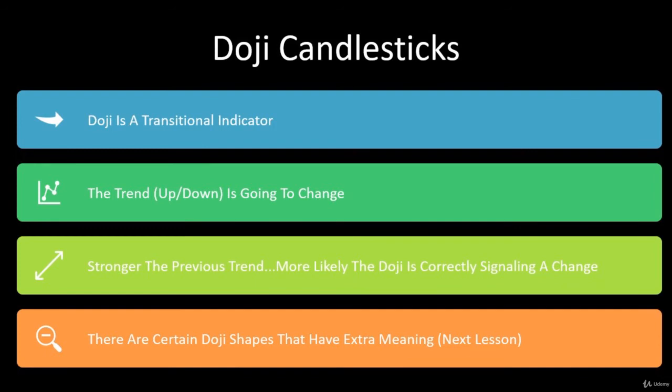In the next lesson, we're going to learn that there are certain doji shapes that have extra meaning. We know a doji is a transitional indicator and the stronger the trend, the better the chance it signals a change — but how that doji looks could provide us even more meaning. That's coming up in the next lesson around doji candlesticks.